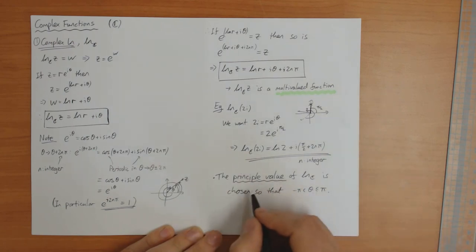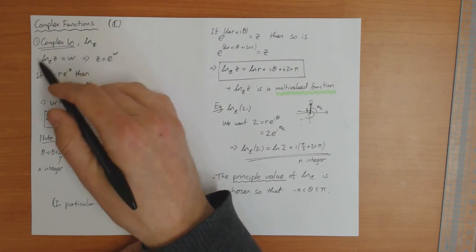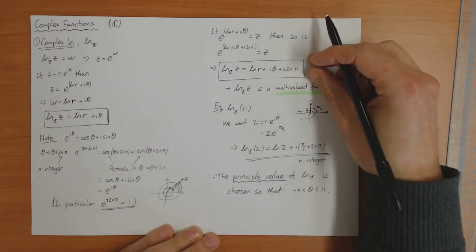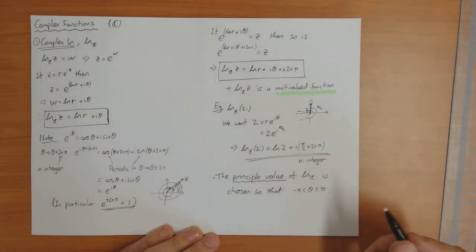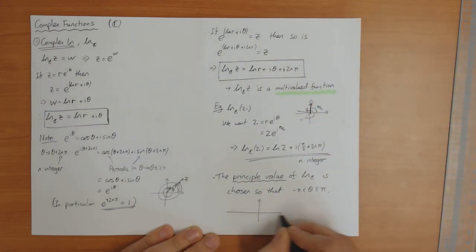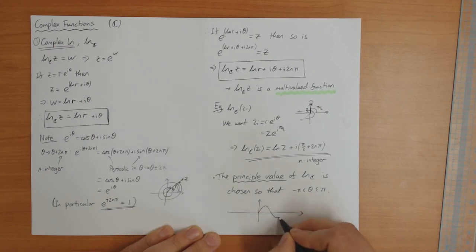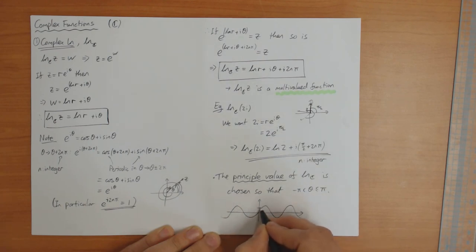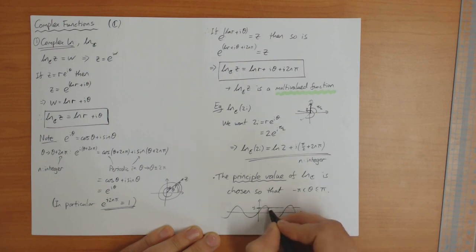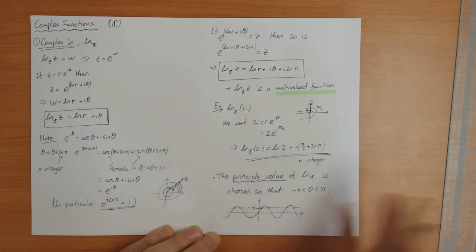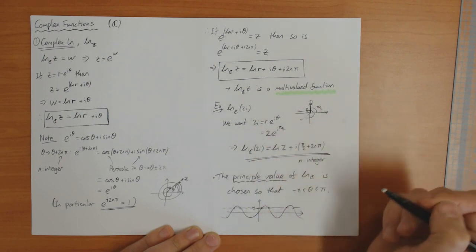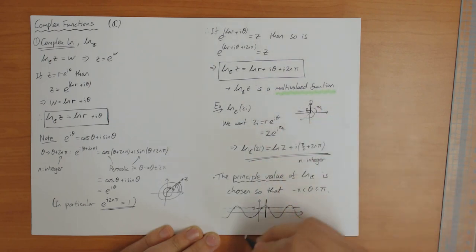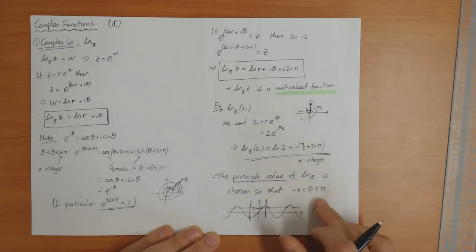This is a choice — it's not something that follows mathematically from the definition of complex log, but it's our choice. We've got a multi-valued function and we want to choose one particular value. It's exactly the same choice you make with the arc sine function. The sine function is periodic, so arc sine has infinitely many solutions — it's multi-valued in the same sense that complex log is. But you just say, I'm going to choose my solution to be between here and here. That's exactly the same thing you do with complex log.